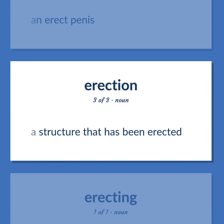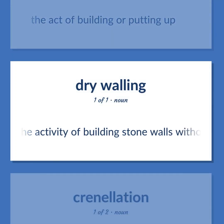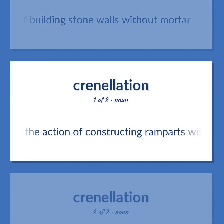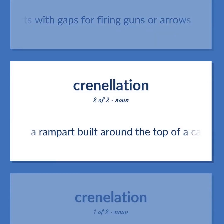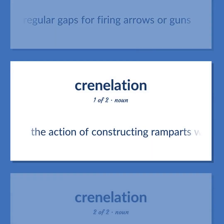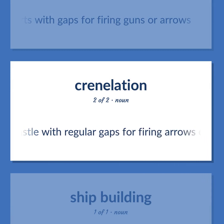Battlementation: the action of constructing ramparts with gaps for firing guns or arrows. Battlement: a rampart built around the top of a castle with regular gaps for firing arrows or guns.